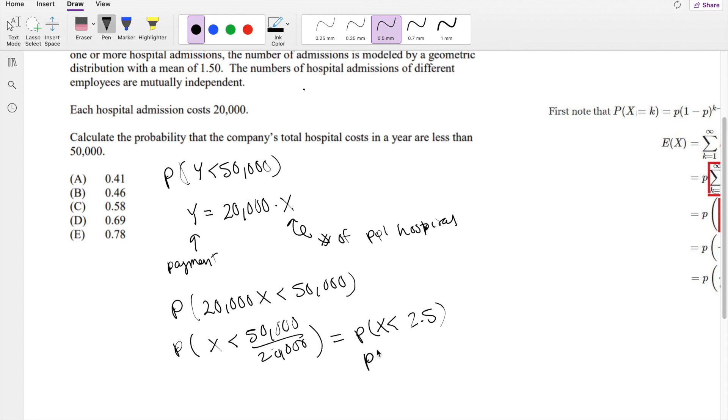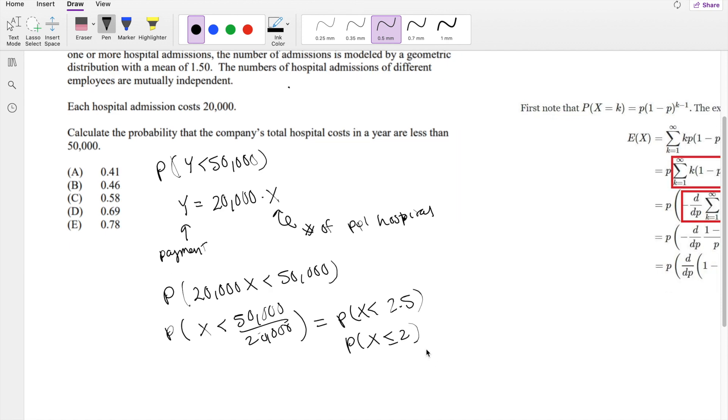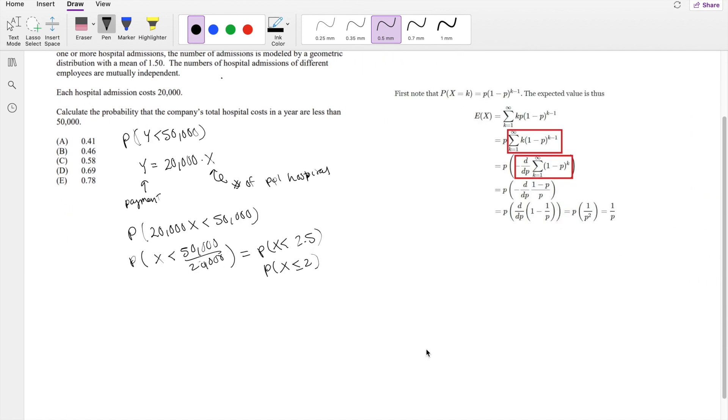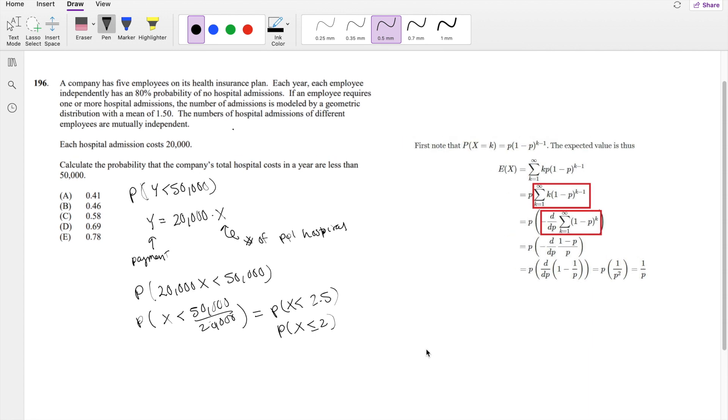Or basically, what is the probability that the number of people hospitalized is less than or equal to 2? Because you can't really have 2.5 people.